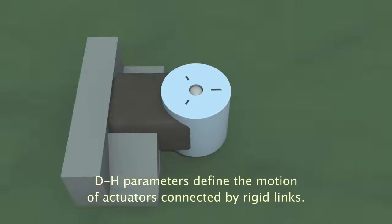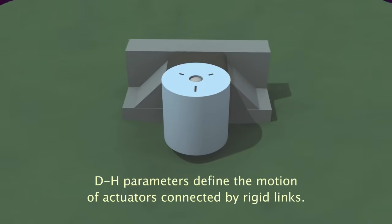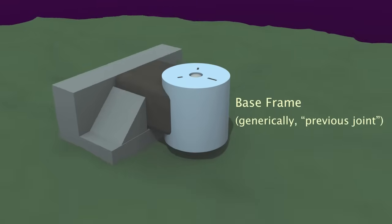Denavit-Hartenberg parameters allow you to succinctly describe the motion of a series of rigid joints. This is useful for efficient calculation of forward and inverse kinematics.